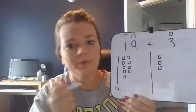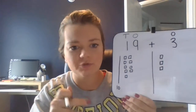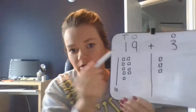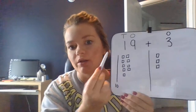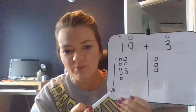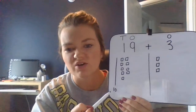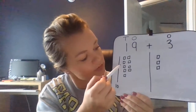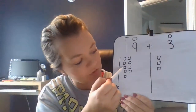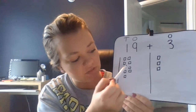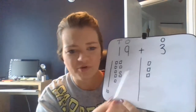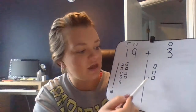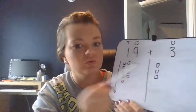All right, does your board match mine? For 19, how many groups of ten do I have? I have one, because I'm looking at the tens place. It really helps to label it. So I have 10, 11, 12, 13, 14, 15, 16, 17, 18, 19. And then remember for three, I don't have any groups of ten, so I just have one, two, three.